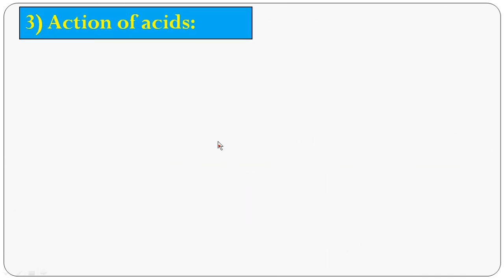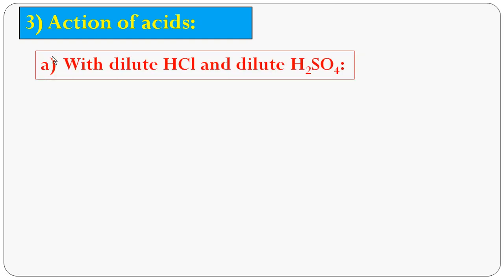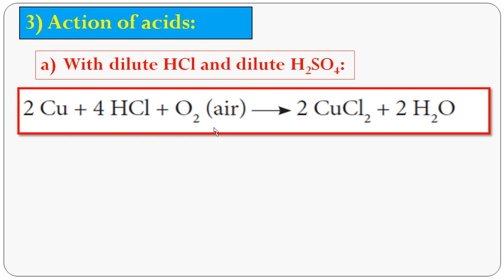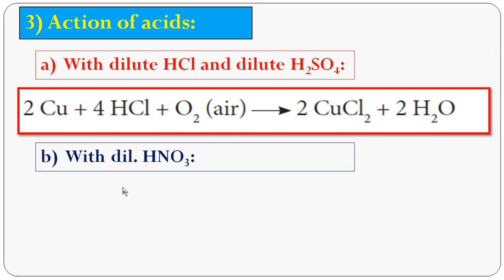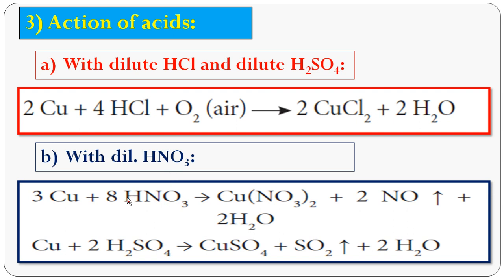The third chemical property is the action of acids. Copper does not react with dilute hydrochloric acid or dilute sulphuric acid in the absence of air, but in the presence of air the reaction takes place. Copper reacts with dilute hydrochloric acid in the presence of oxygen to form copper chloride plus water. Copper also reacts with dilute nitric acid (HNO₃) to form copper nitrate Cu(NO₃)₂, nitric oxide (NO), and water.